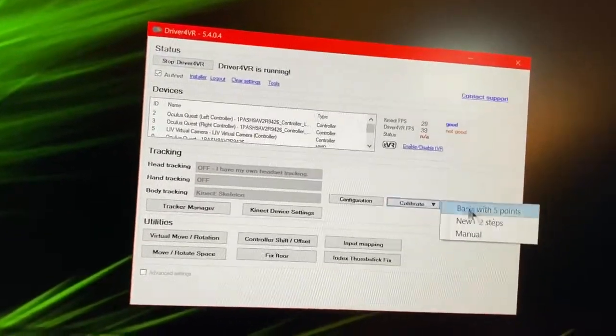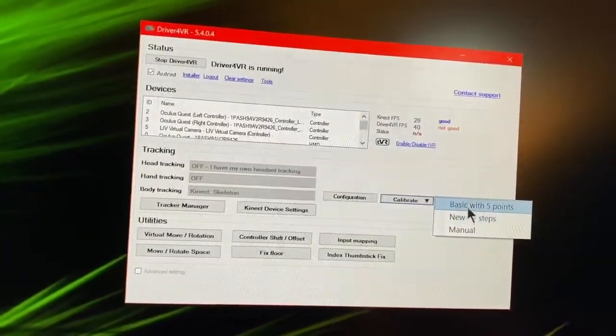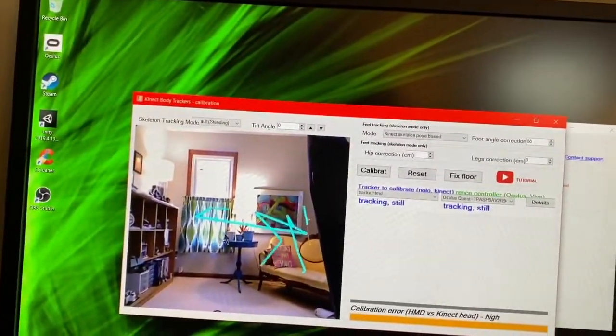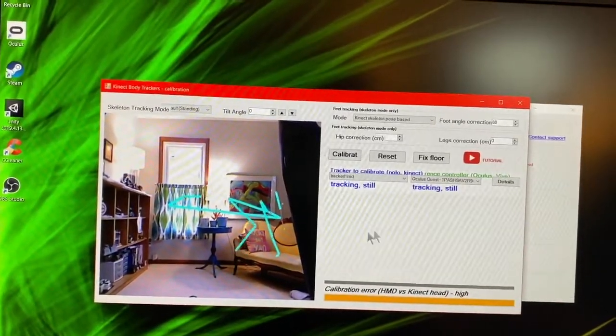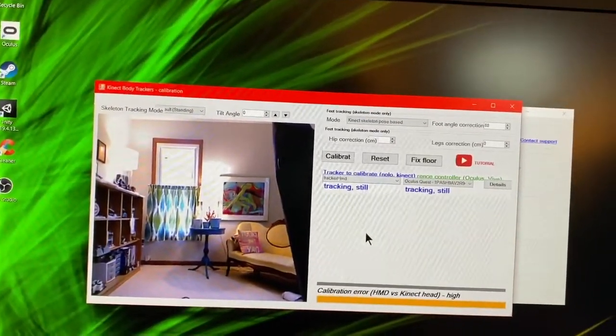Now it's going to take a second and you should be able to press this calibrate button right here. So it's going to pop up and say basic with five steps or two steps. I'm going to do five points and you're basically, now it's just kind of glitchy, but I am going to do this and you're going to follow the instructions that should pop up right here. So I'm going to do that right now and check back.